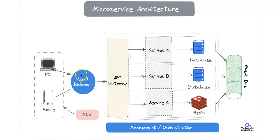We also have the Load Balancer, which acts as a traffic distributor that spreads incoming client requests evenly across multiple API gateway instances or microservices. This ensures the system remains responsive even under high traffic conditions.